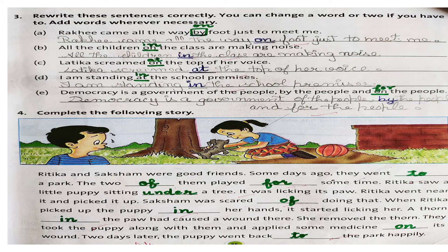Toh ye jo bhi correction hai, apne karna hai — underline karna hai, aur sentences ko apne theek karke dubhara likhna hai. Next hai — complete the following story. Again humne wahi prepositions yahaan pe fill karni hain, jo bhi correct prepositions hongi. Jaise — Ritika and Saksham were good friends. Some days ago they went to a park. The two of them played for some time. Ritika saw a little puppy sitting under a tree. It was licking its paw. Ritika went near it and picked it up. Saksham was scared of doing that. When Ritika picked up the puppy in her hands, it started licking her. A thorn in the paw had caused a wound there. She removed the thorn. They took the puppy along with them and applied some medicine on its wound. Two days later, the puppy went back to the park happily.